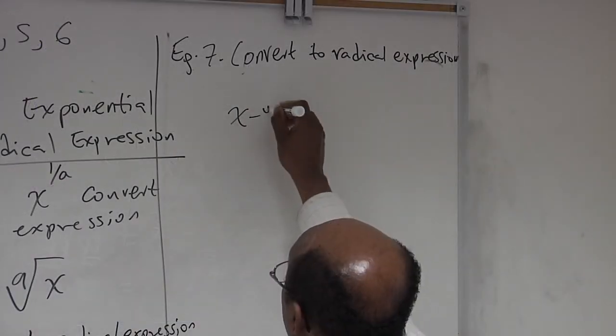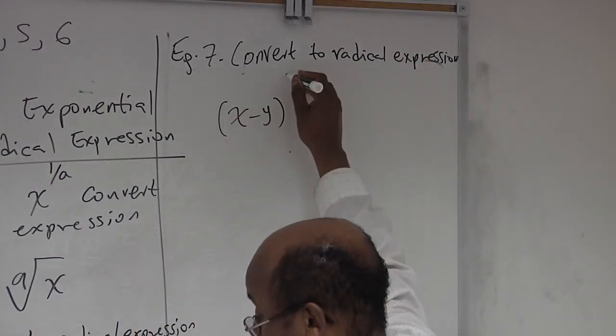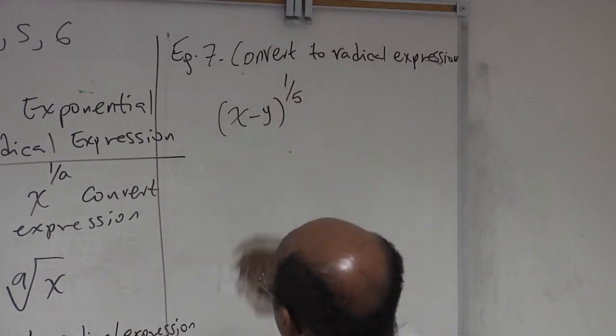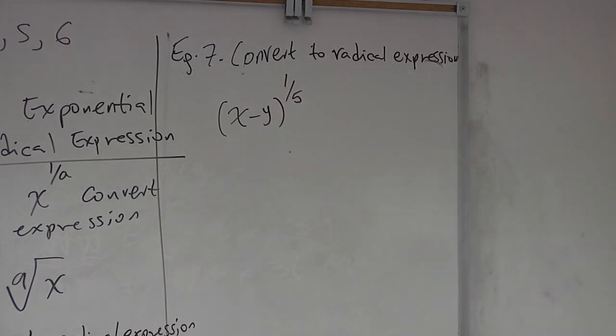Another example: x minus y to the power of 1 over 5 — how can you convert this to radical form?